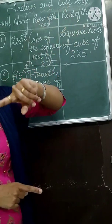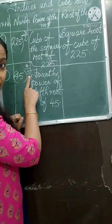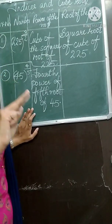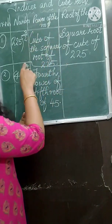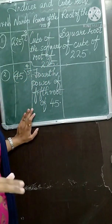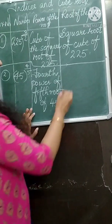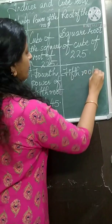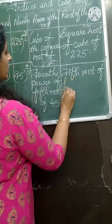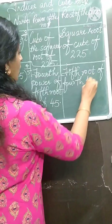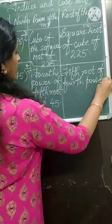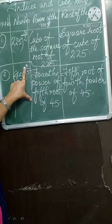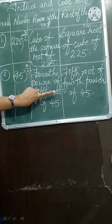Now starting with root for the second case: the denominator is 5, so you write '5th root of'. Then the numerator is 4, so '4th par of 45'. The answer is: 5th root of 4th par of 45.